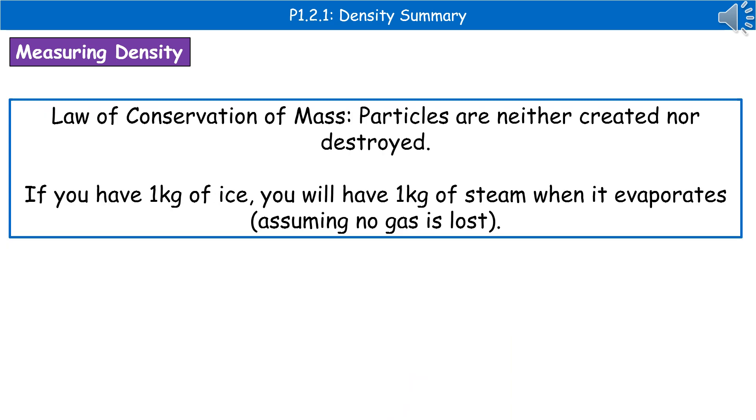And this brings us on really nicely onto our first law of conservation that we will look at in physics, which is the law of conservation of mass, which just states that particles are neither created nor destroyed. So what we find is if we've got one kilogram of ice on the desk in front of us and we're then going to evaporate into steam, we will have one kilogram of steam at the end.